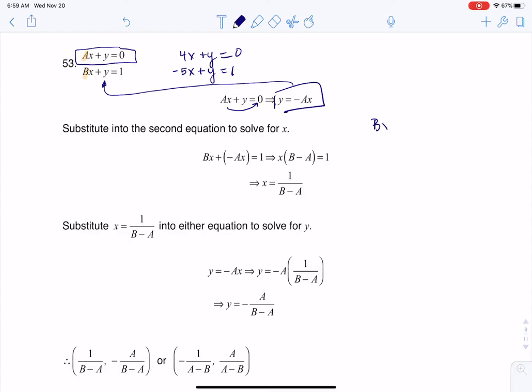So if you think about bx plus y equaling 1, well now I have bx minus ax equaling 1. And the thing is I can factor an x out of there. And I get b minus a here.